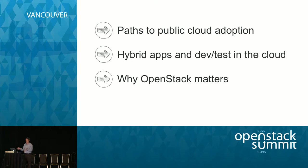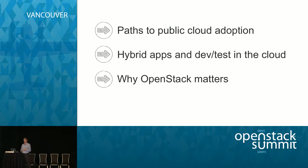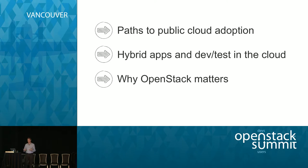At a high level, I'm going to go through a variety of paths to the public cloud — how enterprise teams are thinking about moving their applications. In particular, I'm going to focus on two techniques: one is called hybrid applications, and the second is doing development and test in the cloud. Towards the end, I'll talk about why we think at SkyTap that OpenStack is important and will be an important part of this transition.